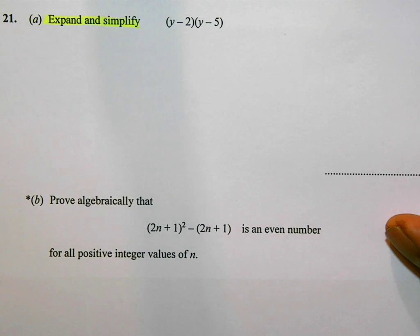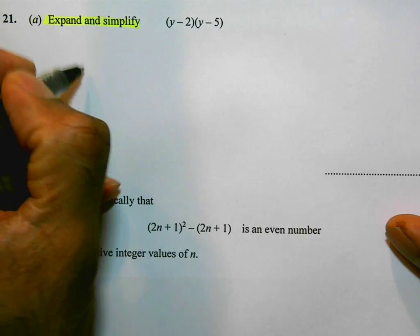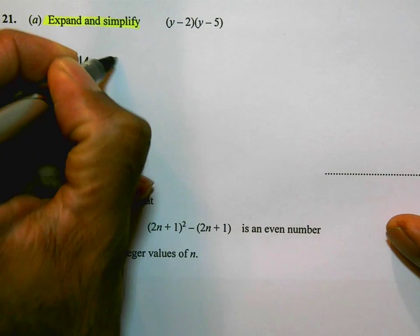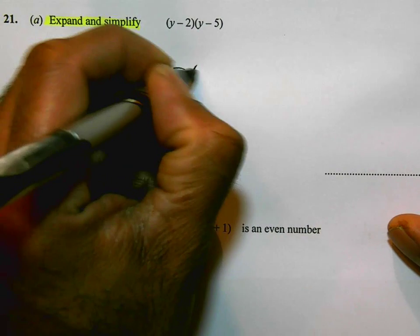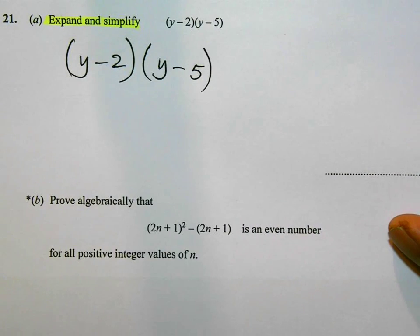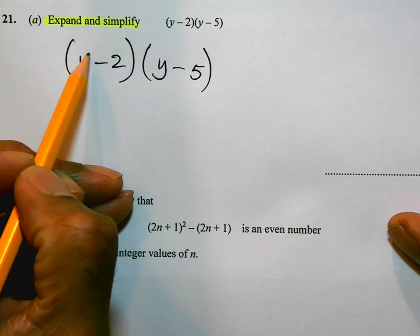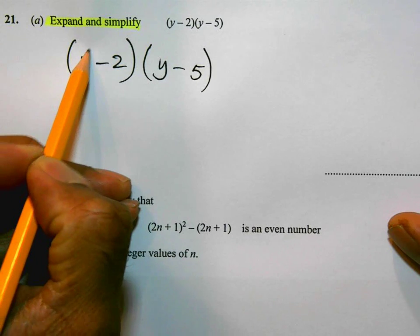This should be something that's pretty straightforward and something that you should be familiar with. We have y minus 2 and y minus 5. You may well have a range of techniques from the box method or the smiley face or whatever method you use. I'm going to use this link, sometimes called the smiley face method.